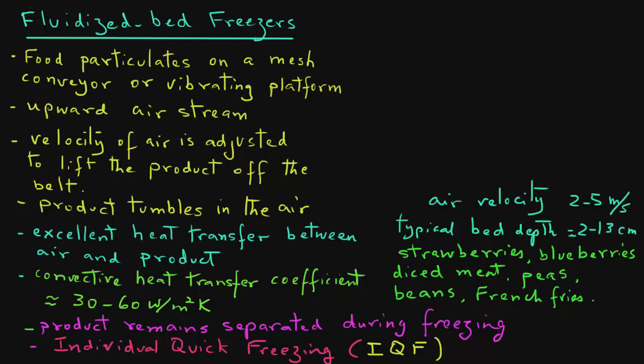Products such as french fries that are of irregular shape may need agitation by a moving base, so they are often frozen on a vibrating platform. Also, products that are more sticky, such as sliced green beans, sliced carrots, and sliced cucumber, can be individually quick frozen better in a fluidized bed freezer than on a regular belt freezer, because of the separation caused between the particulates by the upward stream of air.